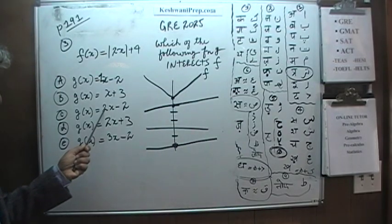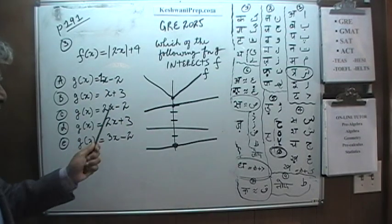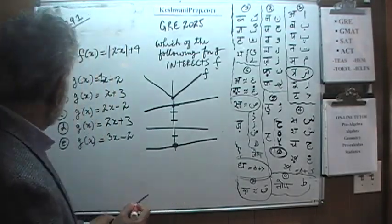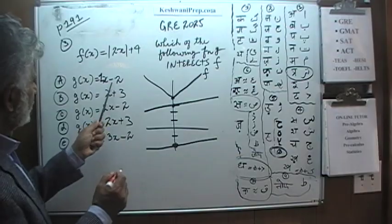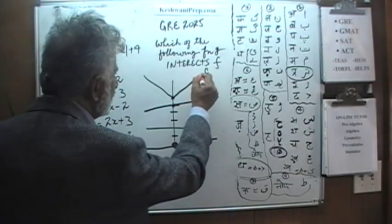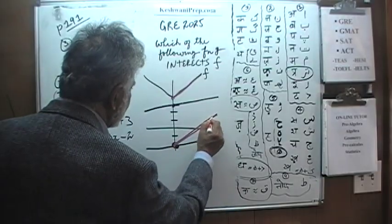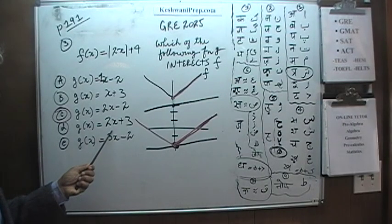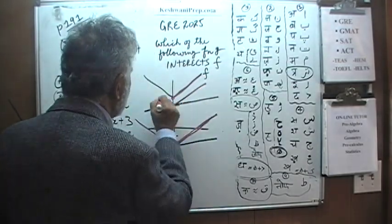Answer choice C has a slope of 2, the same as f, so it is going to be parallel to f. It starts at negative 2 — let's draw it in a different color. They are parallel; it is the same graph shifted down. The exact same thing is true for answer choice D: it starts at 3, but it also has a slope of 2, so it will also be parallel to f and will never intersect.